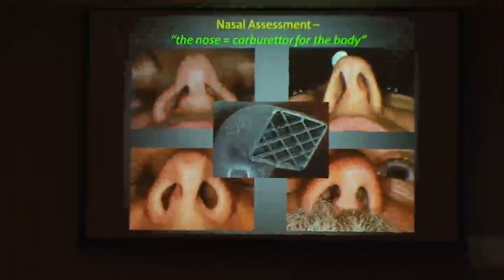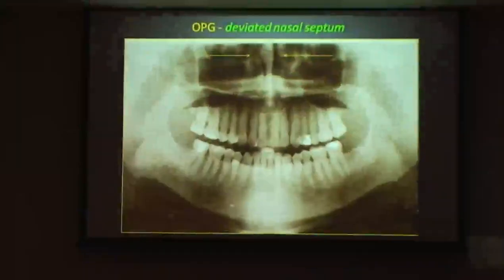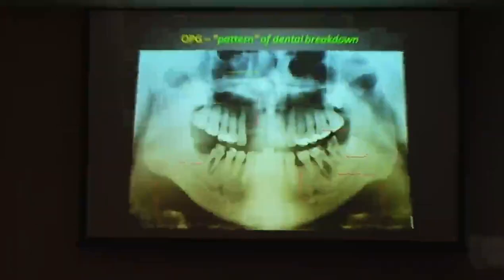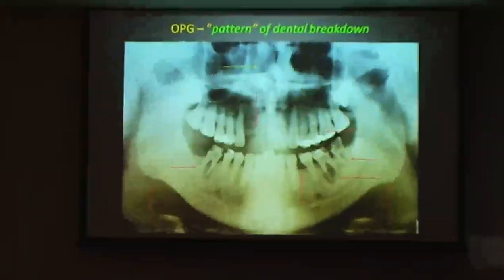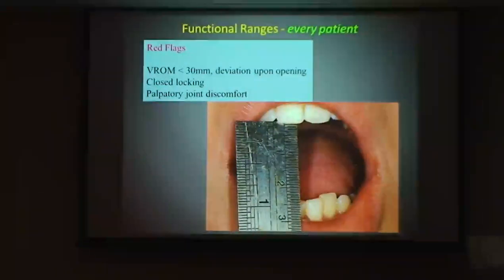Look for compensations indicative of mouth breathing. As Professor Alves said, the nose is the carburetor for the body — start looking at noses, not teeth initially. Look for subtle signs on OPGs suggestive of upper airway resistance. Look for patterns of dental breakdown suggestive of bruxism. Screen your patients from a functional point of view — you have an obligation. Mouth breathers invariably have some level of TMD, but we need to screen and record it.